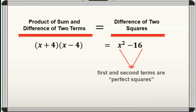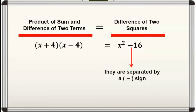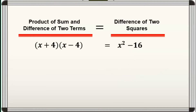Bakit? Kasi ang first at second terms ay perfect squares. Which means, you can find a number or term that when multiplied to itself will give you the first and second terms. For instance, the first term x squared is equal to x times x, and the second term 16 is equal to 4 times 4. Isa pang palatandaan, ang first at second term ay separated ng minus sign. That is why it is called a difference of two squares. Since alam na natin ang product of sum and difference of two terms ay isang difference of two squares, mas madali na natin ipa-factor out ang isang difference of two squares by just reversing the process.